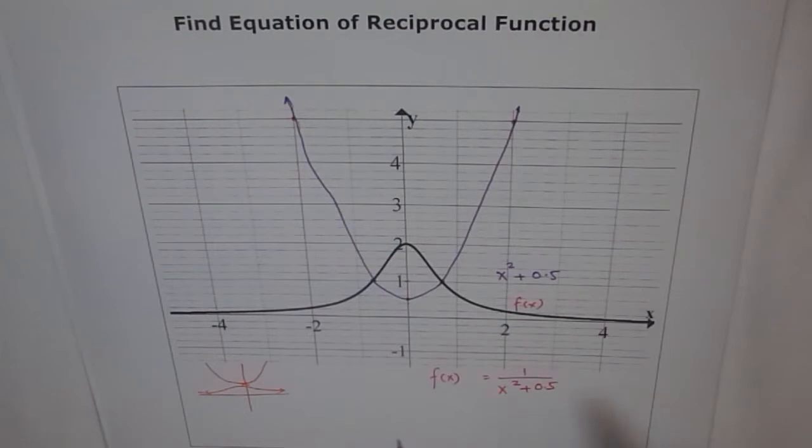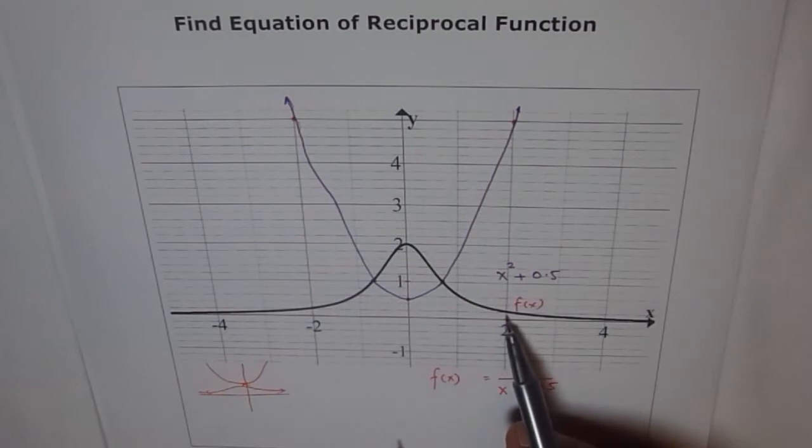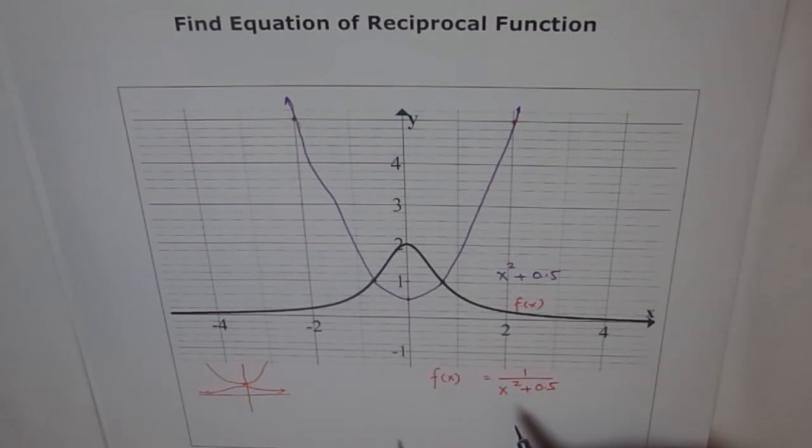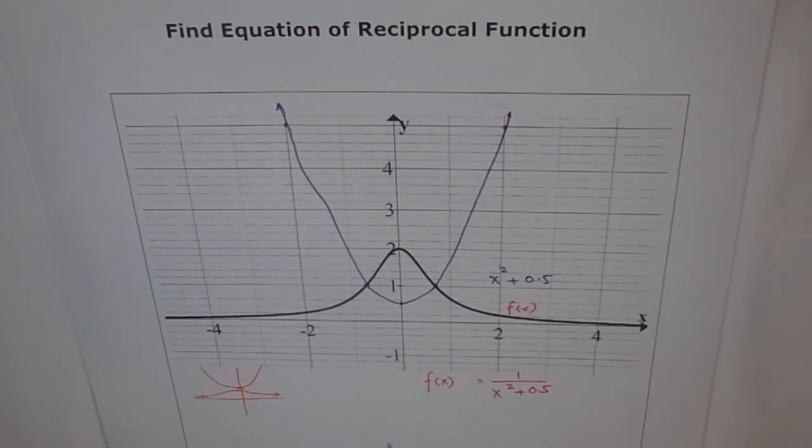You can test the values. If I write x equals 2, I get 1 over 2 squared is 4, plus 0.5 is 4.5. So approximately, yeah, 4.5, which seems to be more accurate than 1 over 5. So I think that should be a good approximation of this reciprocal function. So that's our final answer for the reciprocal function of the given graph.